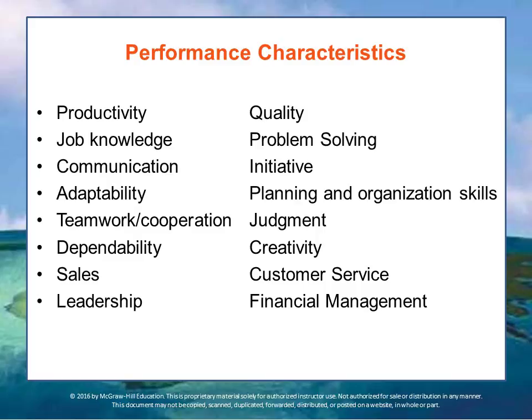This slide shows a list of several different characteristics that can be assessed in a performance review. For example: productivity — the rate at which work is performed; quality of the output; job knowledge; problem solving; communication; initiative — that is, identifying and addressing a problem without being asked; adaptability; planning and organizing skills; teamwork and cooperation — how effective one is on the team; judgment — the ability to determine the appropriate actions when needed in a timely manner; dependability; creativity; and sales — being able to demonstrate selling skills and selling processes.